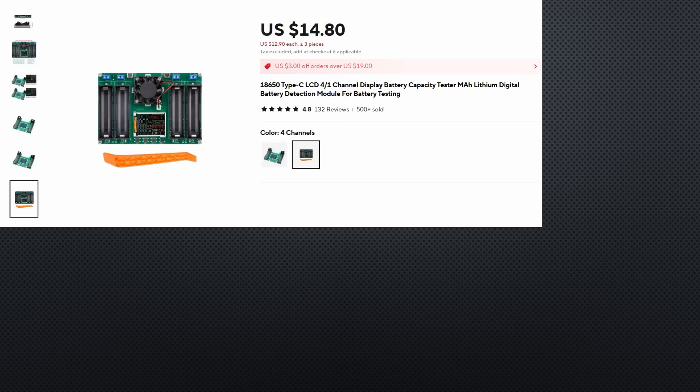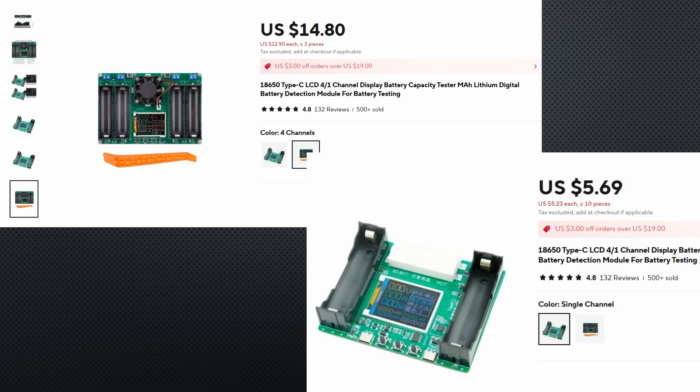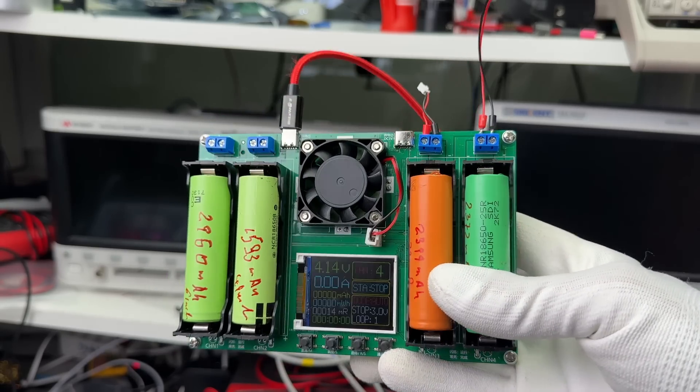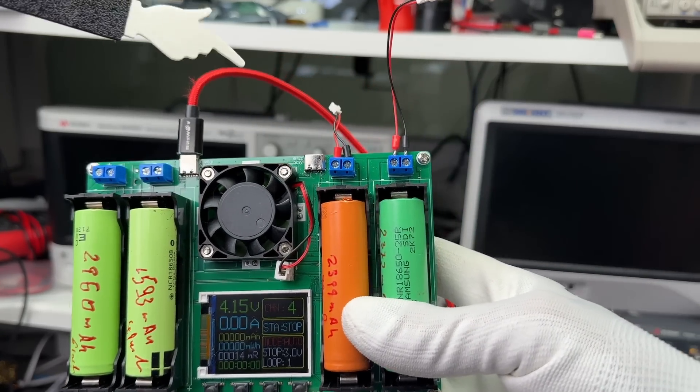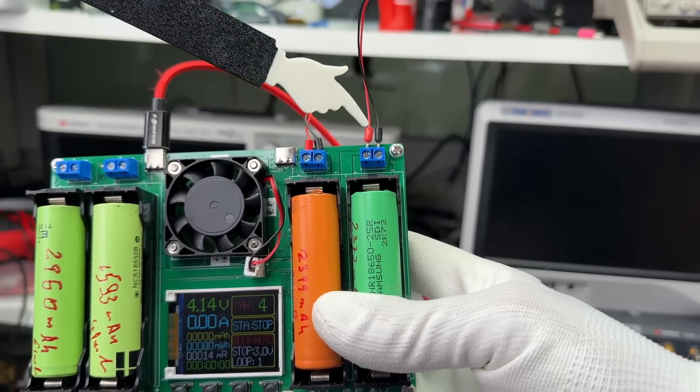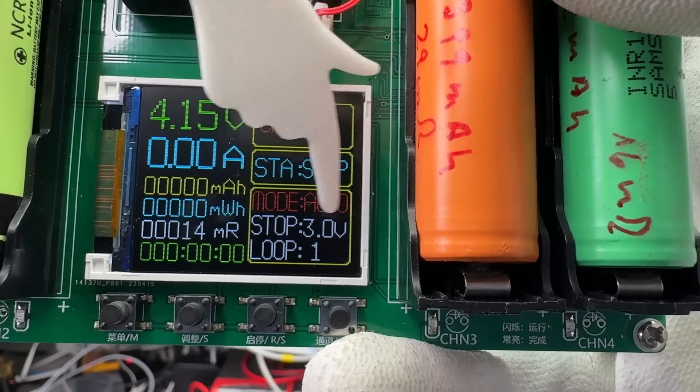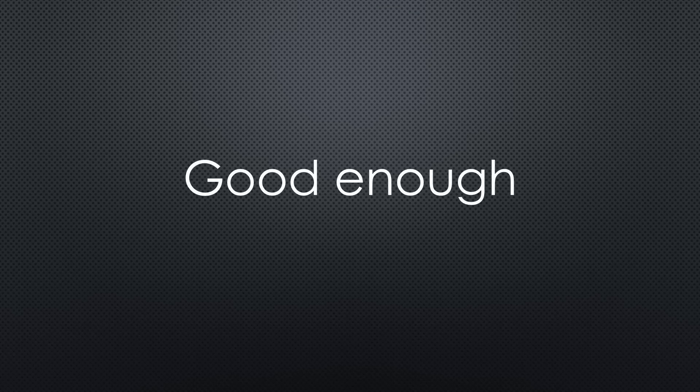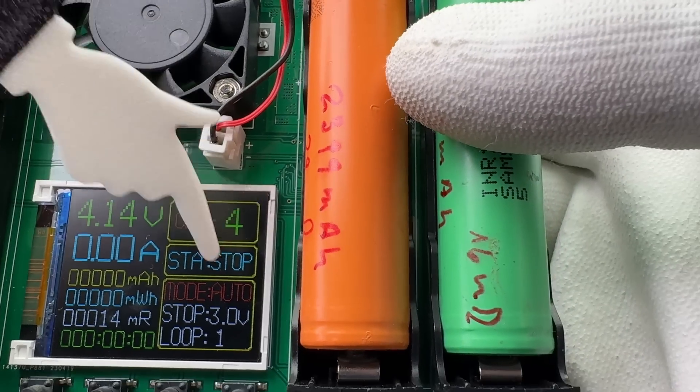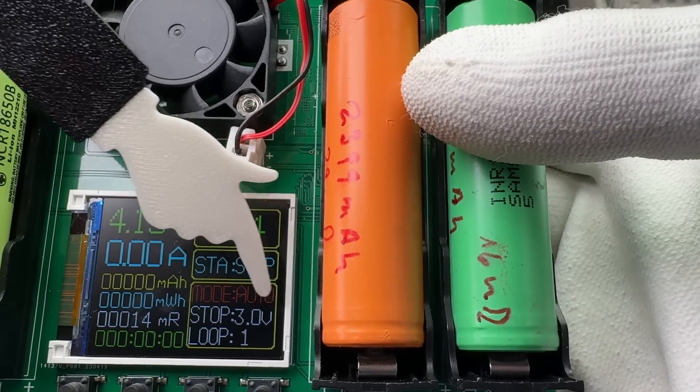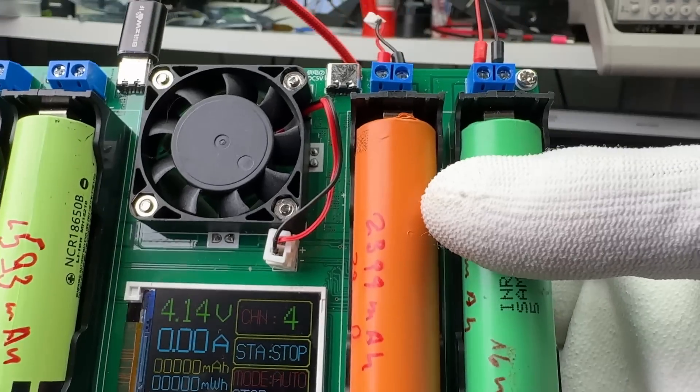My favorite tester for 3.7V batteries is this $15 unit for 4 cells or $6 for 2. It is perfect for 18650 batteries and supports other formats with its flexible terminals. Best of all, it automatically charges and discharges all 4 batteries independently. This tester isn't highly accurate, but it is good enough for the girls I go out with. It stops charging and discharging at specific voltages, making it suitable even for non-protected cells, but not for LiFePO4 batteries.